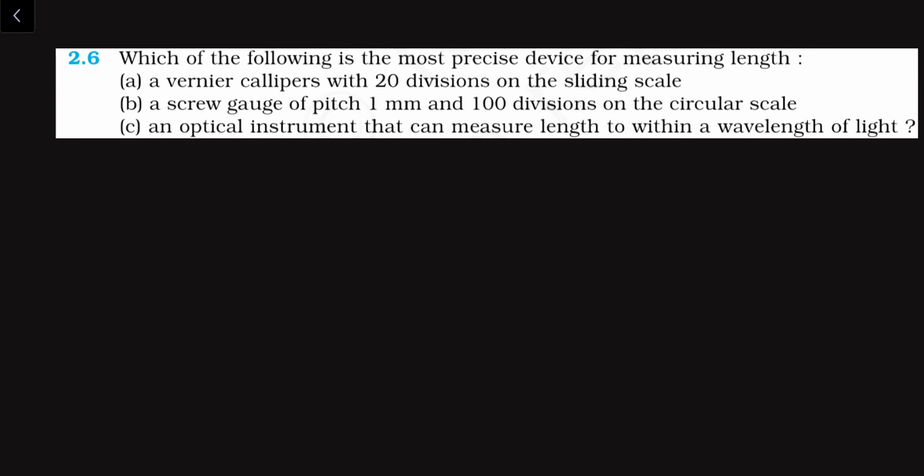In this problem we are given: which of the following devices is most precise for measuring length? We are given three different types of devices and we have to find out which device is most precise. More precise means it has the minimum least count. For a length measuring device, minimum least count means it can measure the lowest possible length.